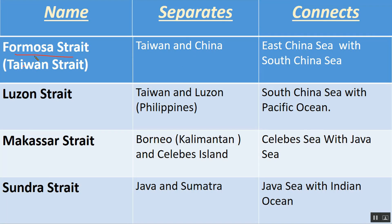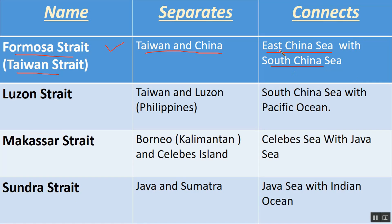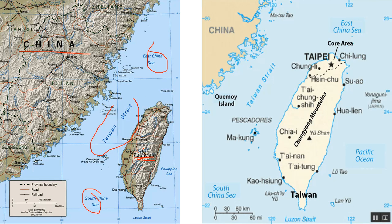The Formosa Strait is also called the Taiwan Strait. It separates Taiwan and China, and connects the East China Sea with the South China Sea. On the map, here is China, here is Taiwan, and the Taiwan Strait connects East China Sea with South China Sea.